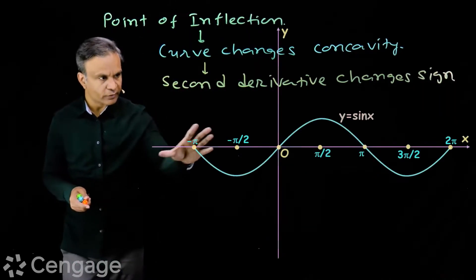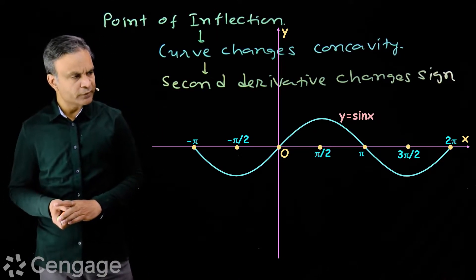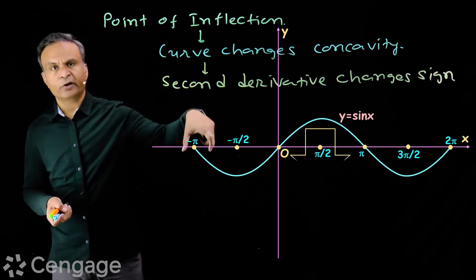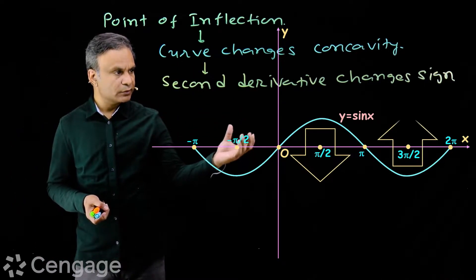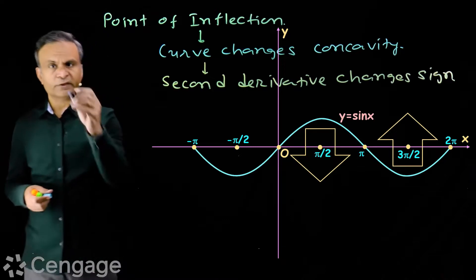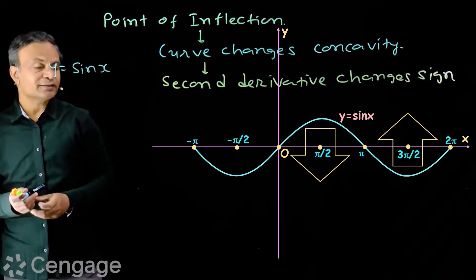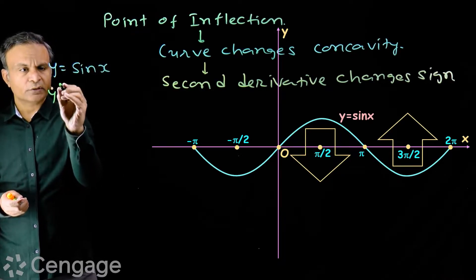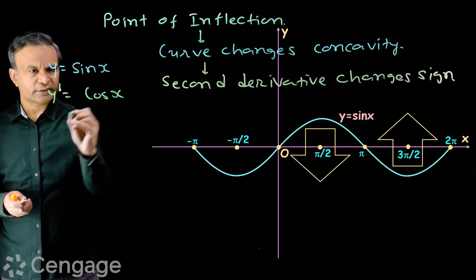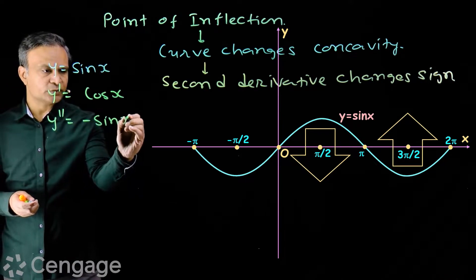For example, here we have the graph of the function y = sin x. In the first and second quadrants the curve is concave downward, and in the third and fourth quadrants the curve is concave upward. Let us check its second derivative: the first derivative y' = cos x and the second derivative y'' = −sin x.